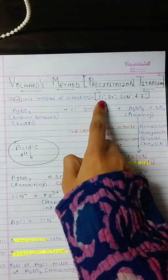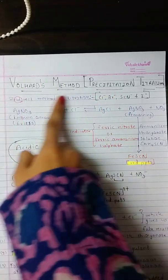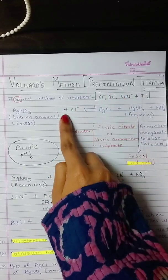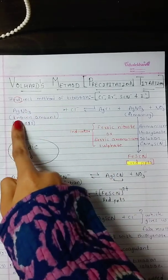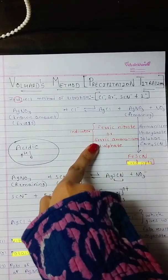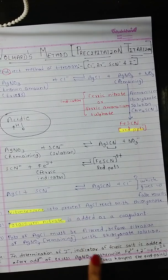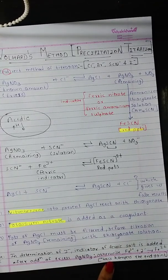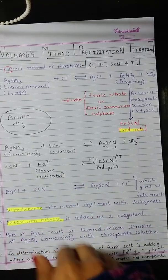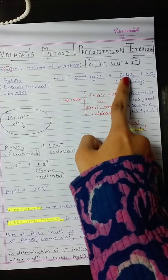As already mentioned, chloride, bromide, thiocyanate, and iodide ions can be analyzed using Volhard's method. When working with iodide instead of chloride, you must add AgNO₃ first, and then add the indicator afterwards. If the indicator is added first and then AgNO₃ is added, the indicator will react with iodide ions, producing Fe²⁺, which will hamper the endpoint. So, always add AgNO₃ before the indicator in the case of iodide ions.